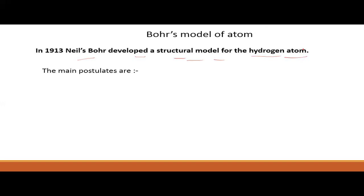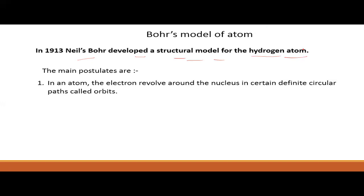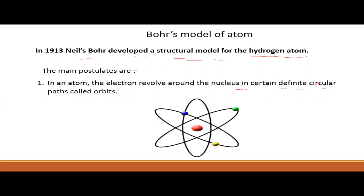The main postulates are: first, in an atom, the electron revolves around the nucleus in a certain definite circular path called orbits. This is the nucleus, around which these circular paths are present. These circular paths are known as orbits.